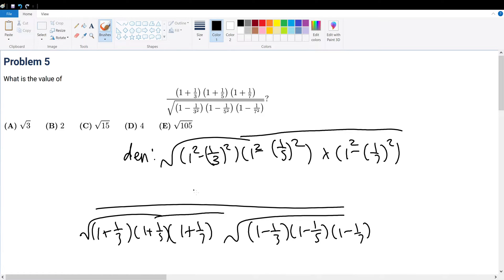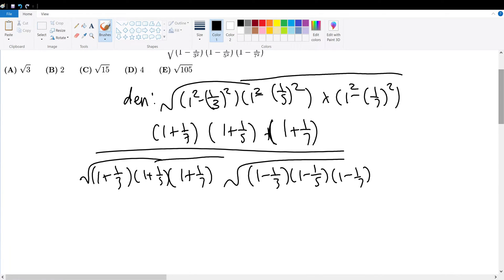Now the numerator remains the same, of 1 plus 1 over 3, times 1 plus 1 over 5, plus 1, or times 1 plus 1 over 7. Now the reason why I did not simplify is because of the similarity here. I factored it into something that both numerator and denominator share in style.